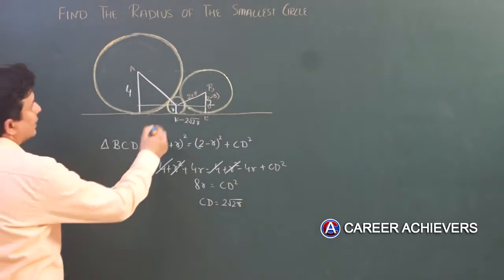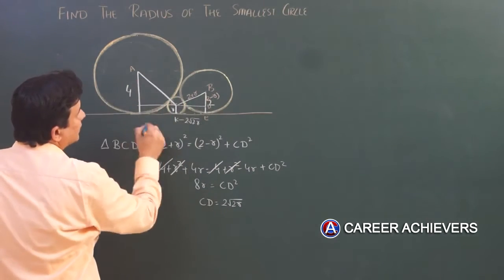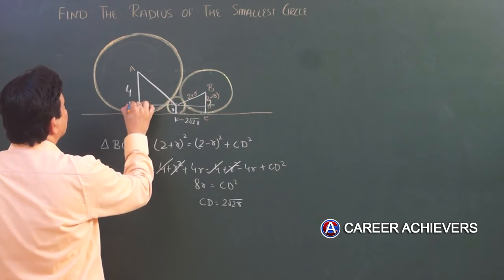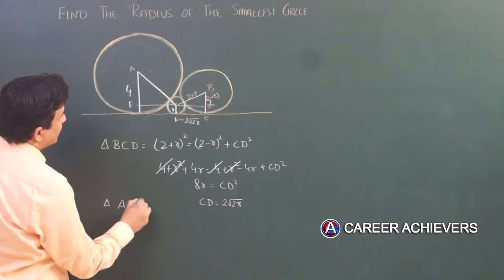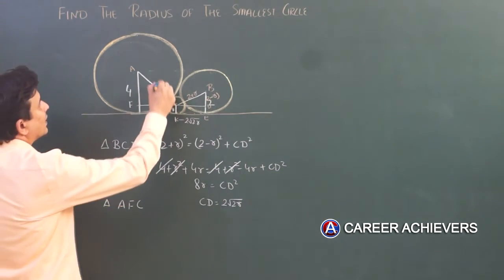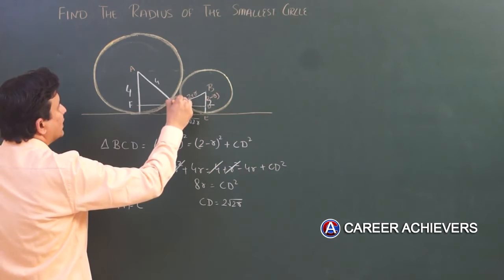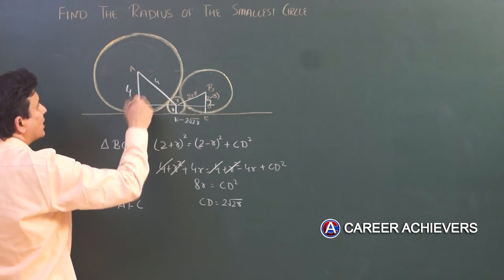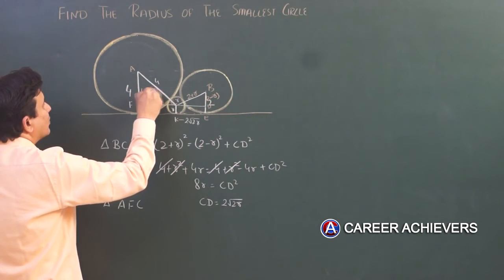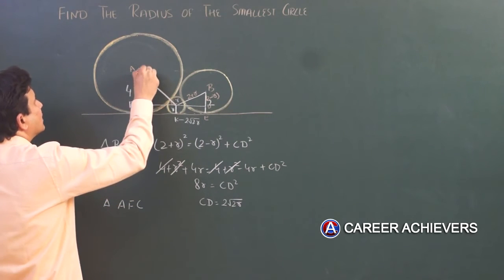Now I'm doing the same work on this side also. Okay, let me name this A, C, F. So in triangle AFC, this is 4, this is R, so this whole part is 4+R. This whole part was 4 from which R is subtracted, so this middle part remaining is 4-R, from here to here.